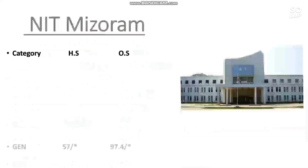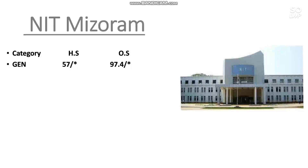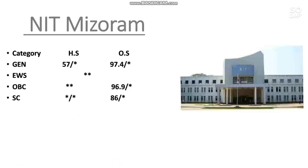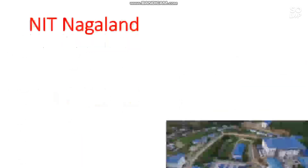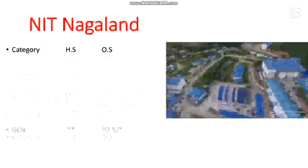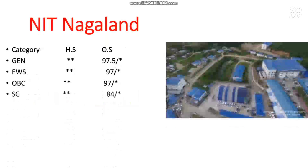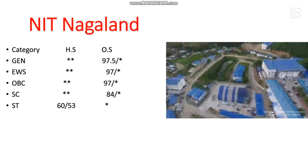The next is NIT Mizoram. For General: 97.4 percentile — no seat for female. For home state cutoffs, please check side-wise, and for female check after the slash. EWS has no seat. OBC requires 96.9 percentile. SC requires 86 percentile. ST has no seat. The next is NIT Nagaland. For General: 97.5 percentile. EWS: 97. OBC: 97. SC: 84. ST has no seat reserved.